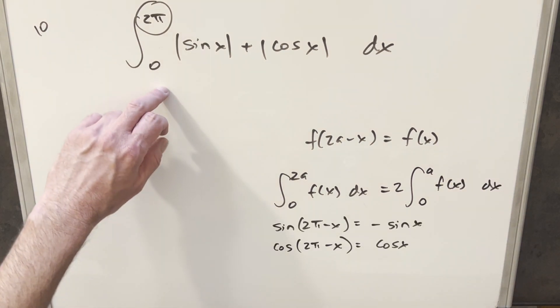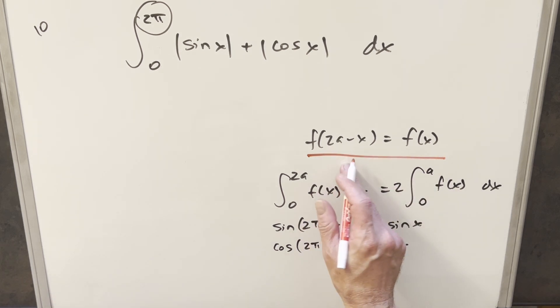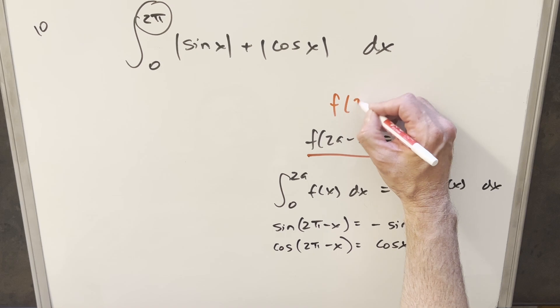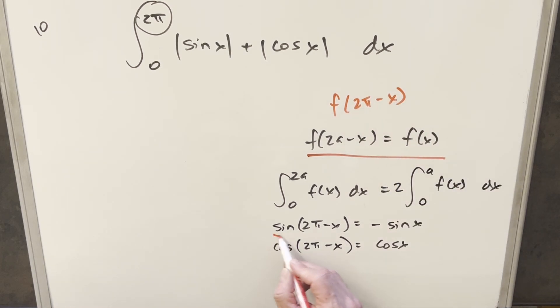So just going ahead with this on our integral, we want to see if this is going to work. So we want to do this test right here. For f of 2a minus x, that's going to be, for this case, going to be, we want to look at what's the value of f of 2π minus x. Well, we have our values for the sine and cosine of 2π minus x.